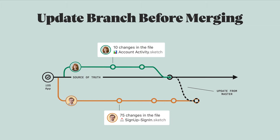This means that someone on your team has made a change to the master while your branch was still open. Usually this means that they've merged their branch before you did, but it could also mean that they added, deleted, or renamed files in the master. Since your branch is linked to master, Abstract can see that there are updates to the master files that you have to bring into your branch. For a deeper dive or a refresher on how branches are related, check out the collaborating with your team video in the branching section.